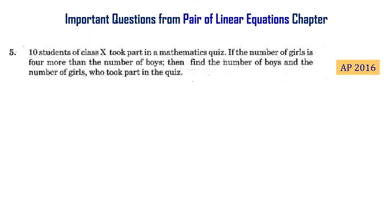10 students of class 10 took part in a mathematics quiz. If the number of girls is 4 more than the number of boys, then find the number of boys and number of girls who took part in the quiz. This is from the AP final exam 2016 lecture.